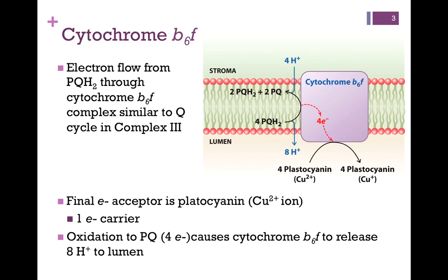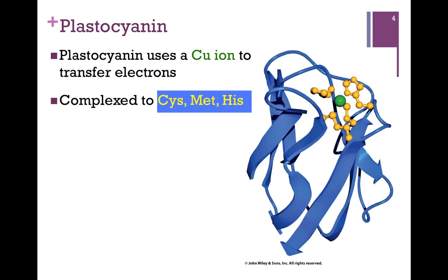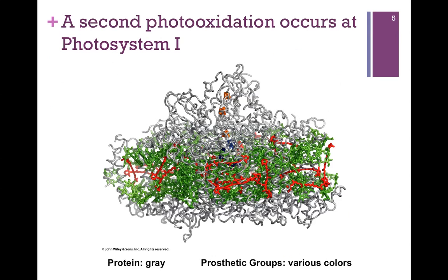The plastocyanin will then carry the electrons to the next component in the chain. Here's the ribbon diagram of plastocyanin, with the copper ion in the center that's going to transfer those electrons. It's complexed to cysteine, methionine, and histidine — as you can see, a very small protein.